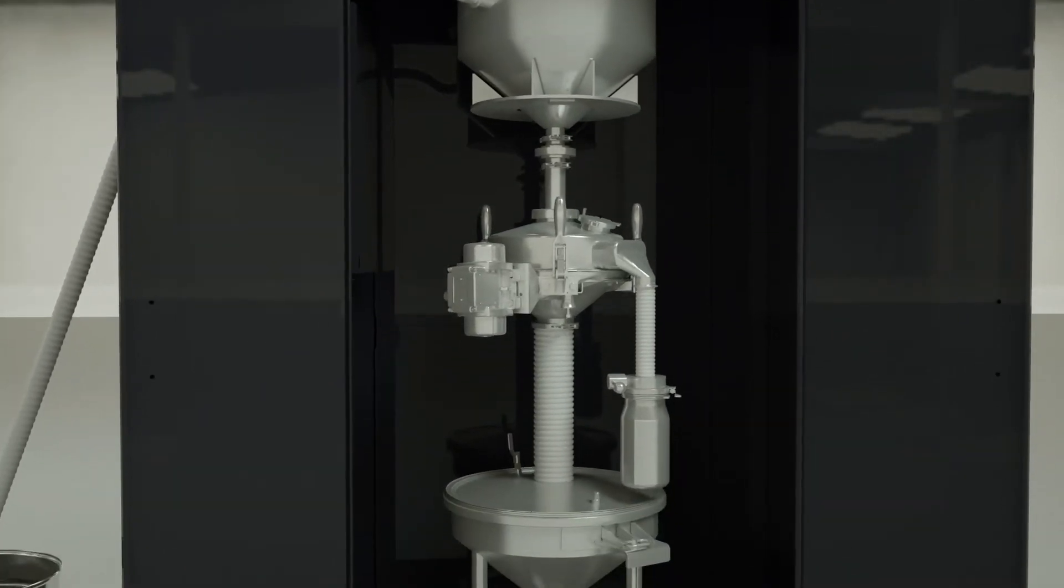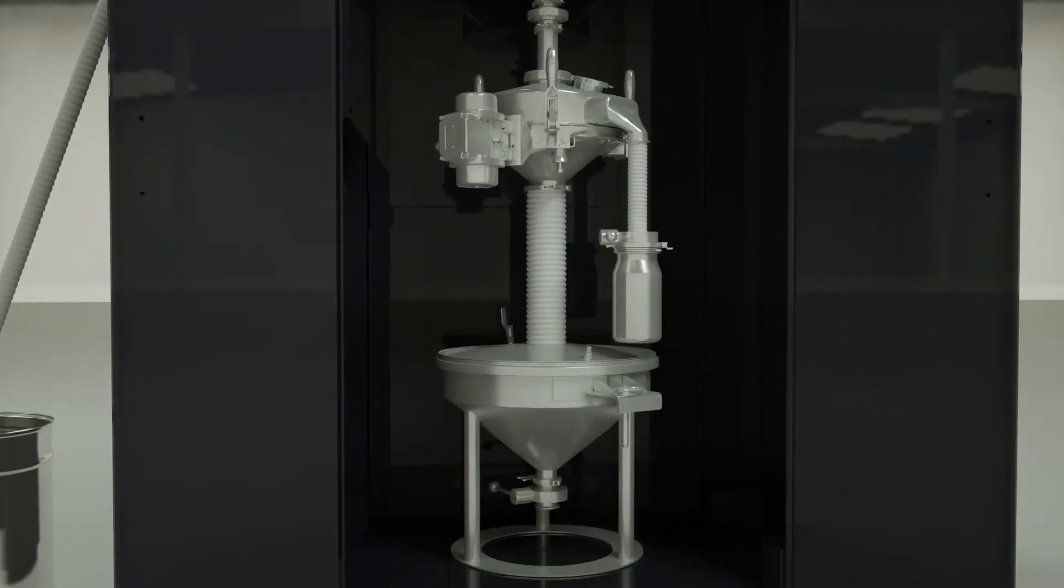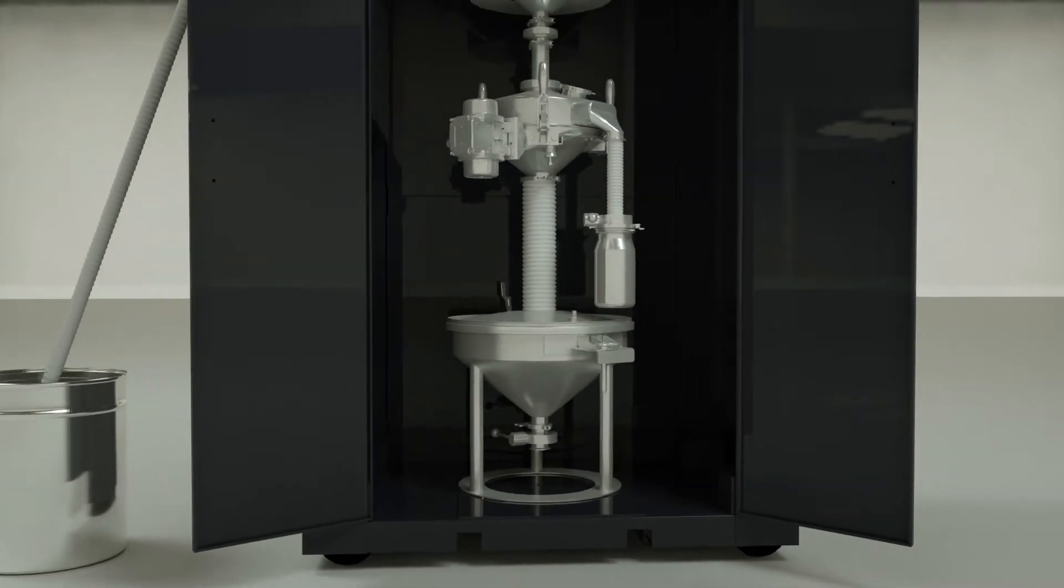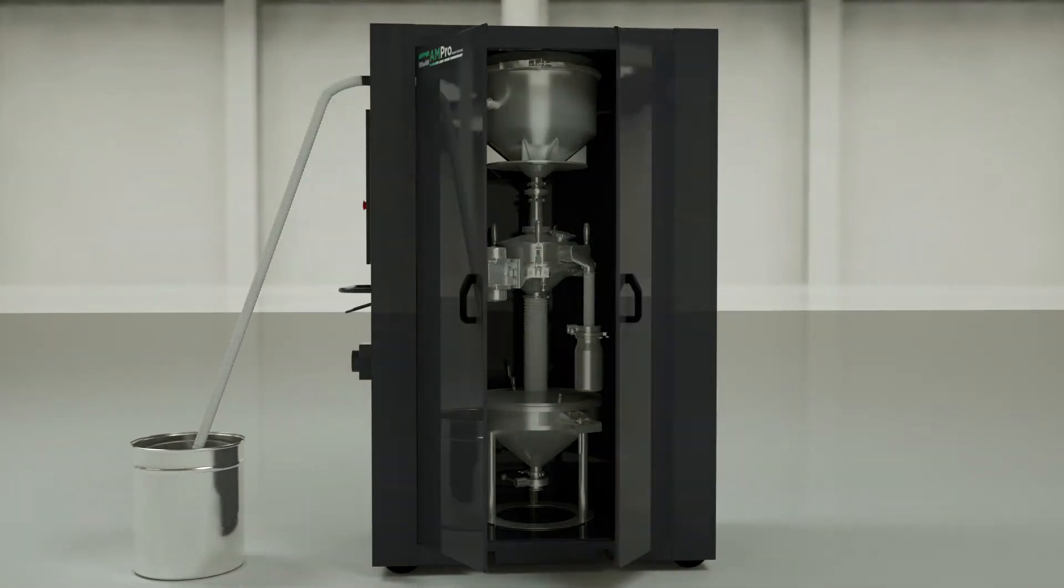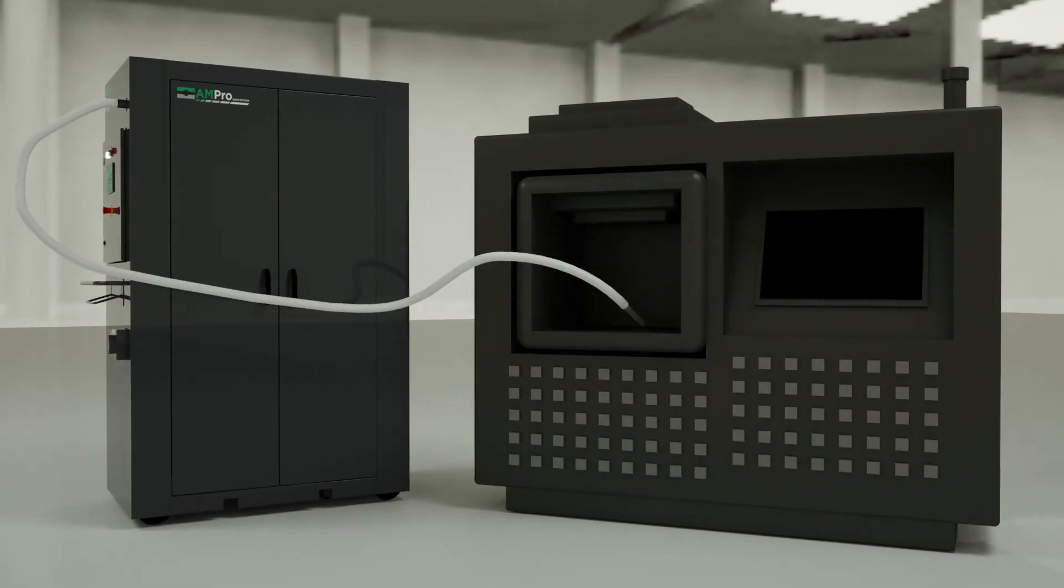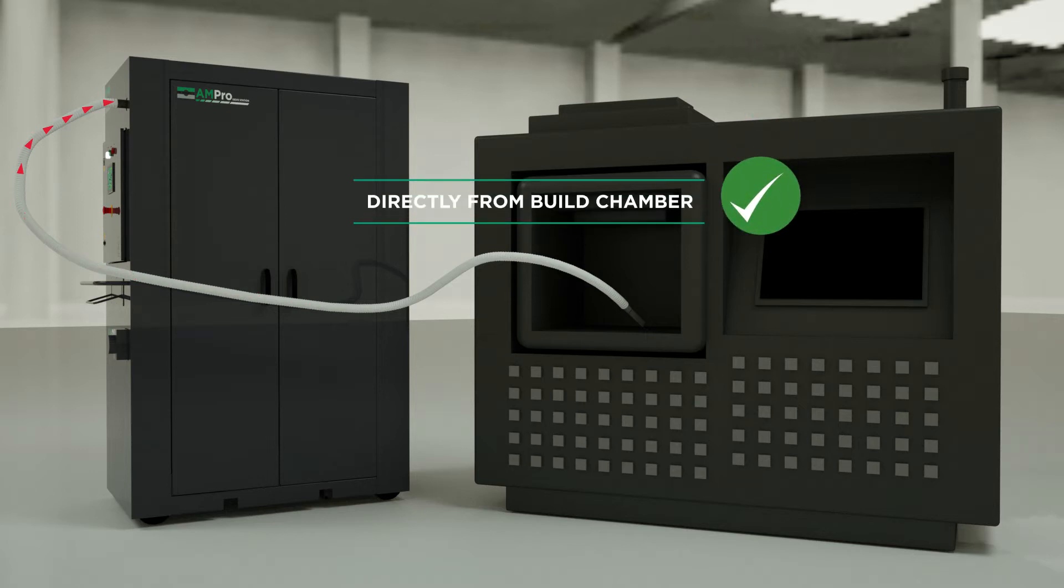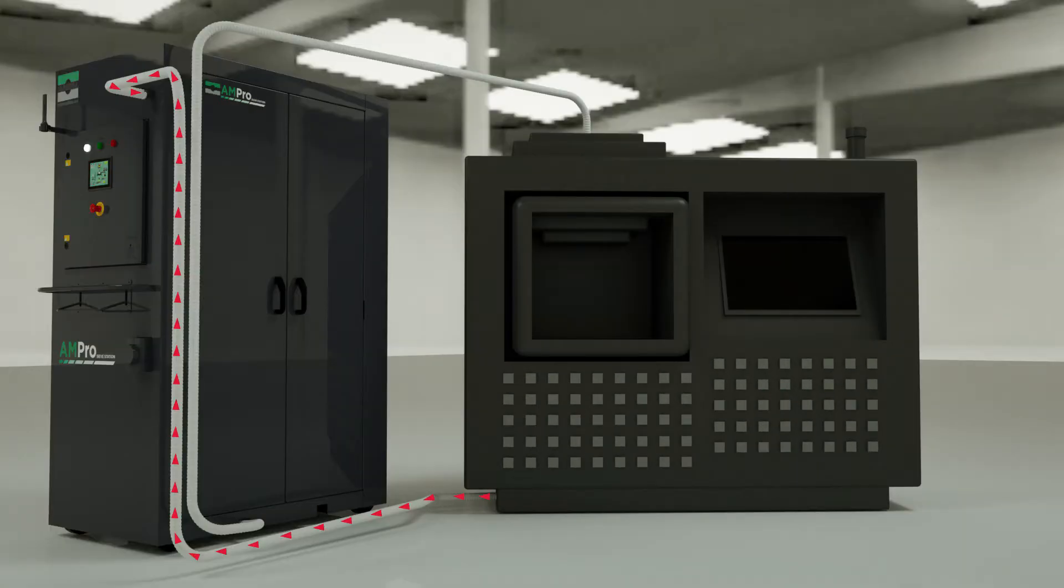Secondly, after a build is complete, unused powder can be recovered efficiently. This would traditionally have been done by manually transferring powders between vessels. However, the Russell Ampro SIF station has been developed to provide full integration into your printer setup, through the rapid evacuation of used powder directly from the build chamber, or by integrated closed-loop powder recovery.